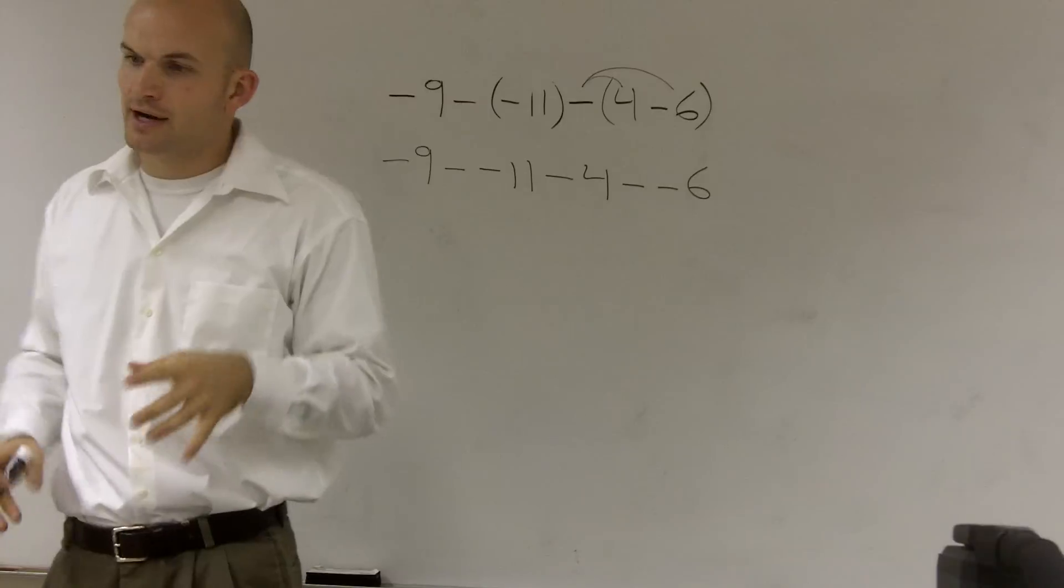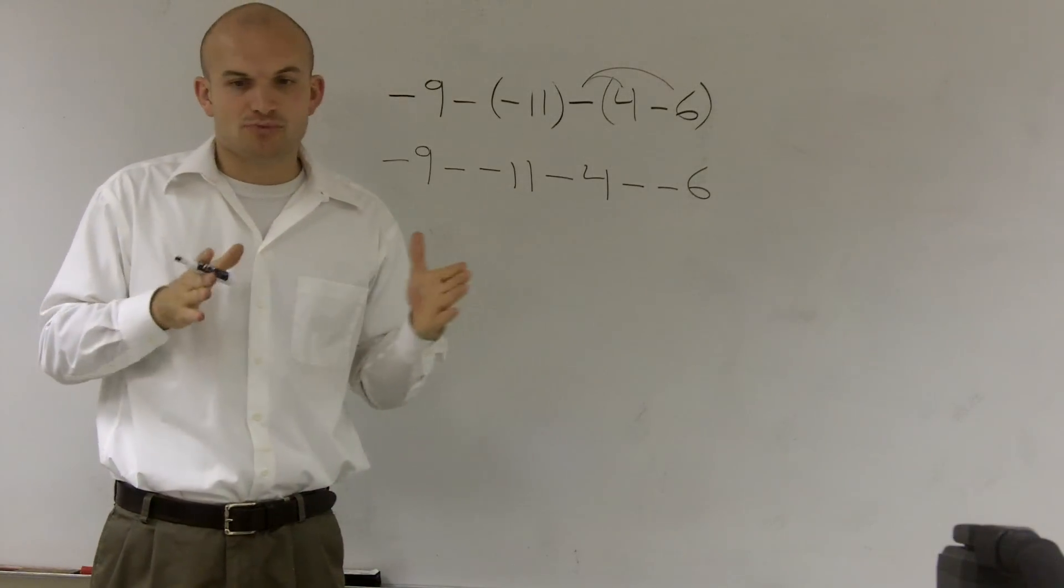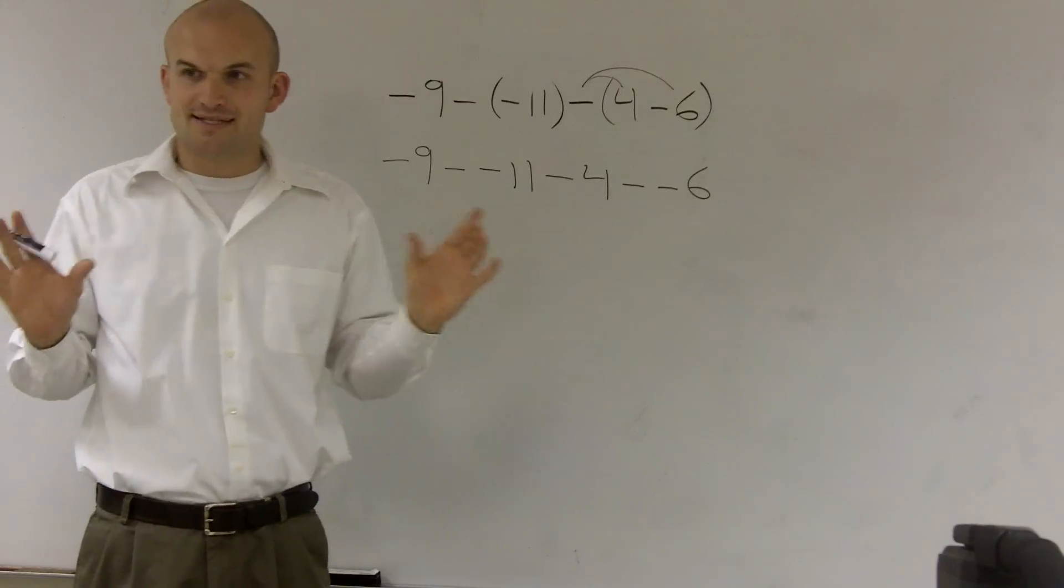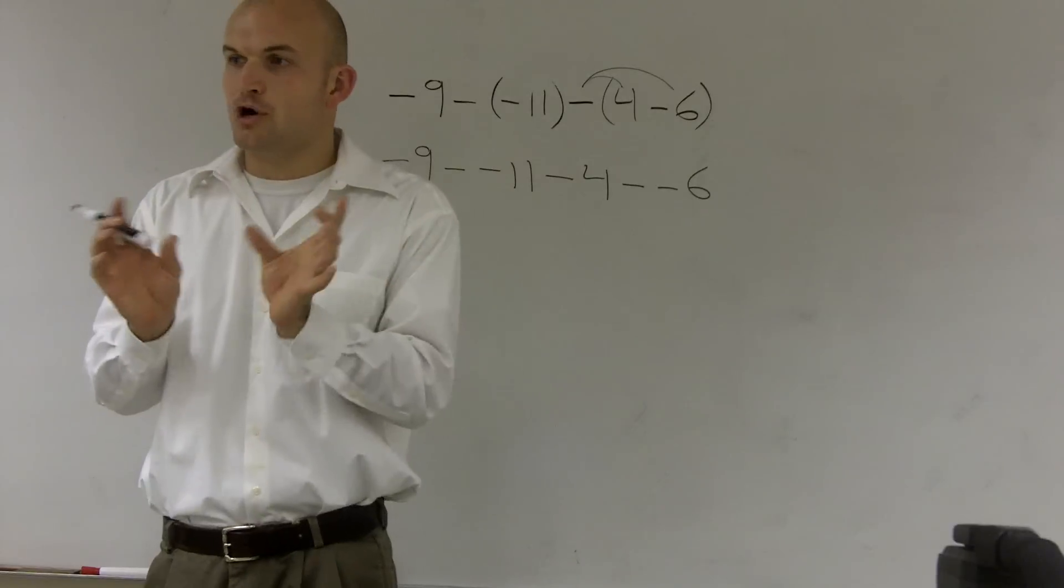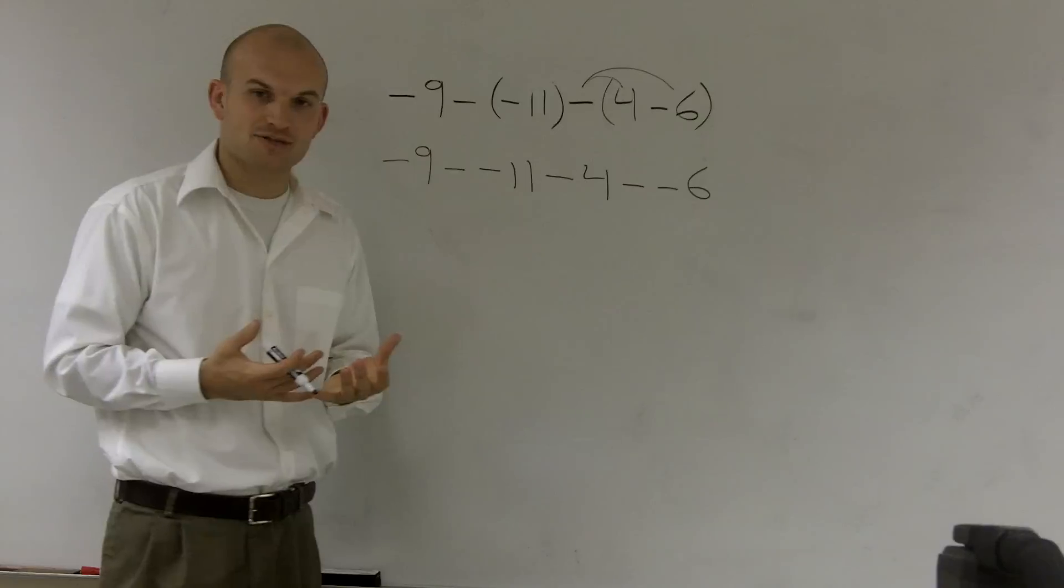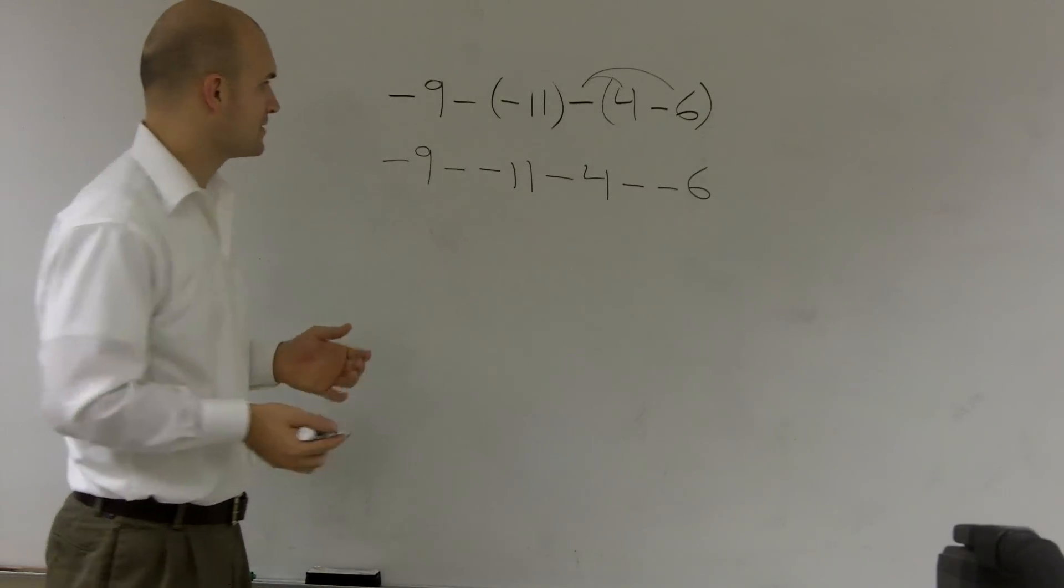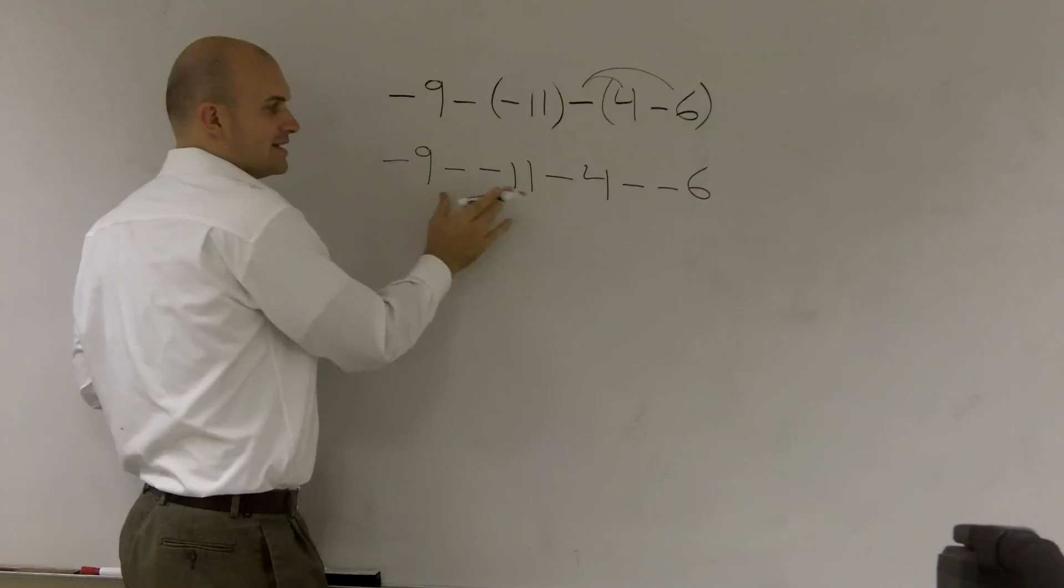Now there's one thing you need to remember. Whenever you have a number subtracting from a negative, that's a double negative. Like in English, when you say I don't not love math, the don't and the not cancel each other out. It's the same thing in mathematics with a subtraction and a negative sign. Whenever you have two of them to combine, subtracting a negative is going to cancel out.